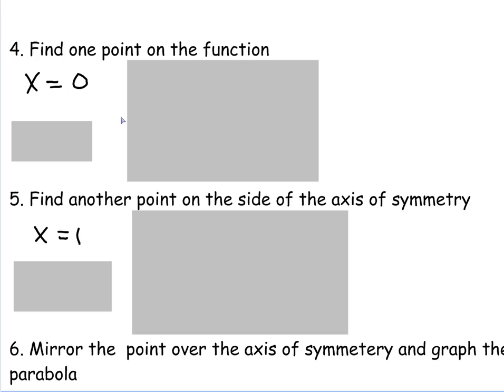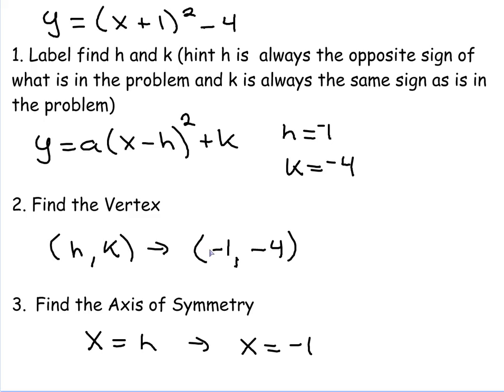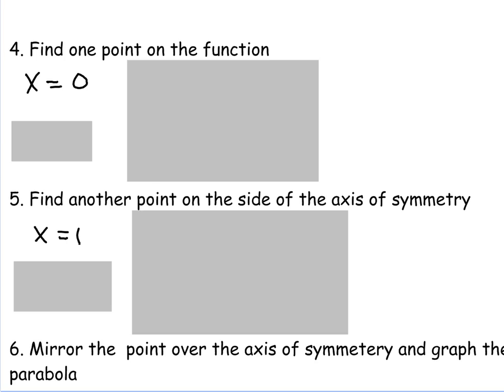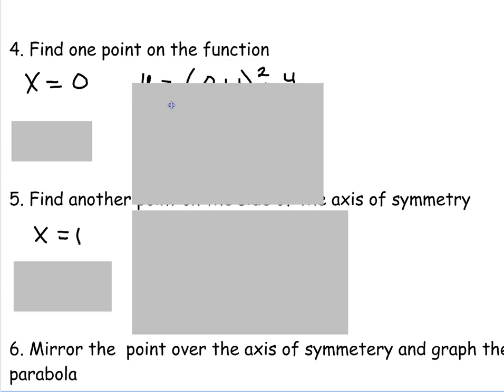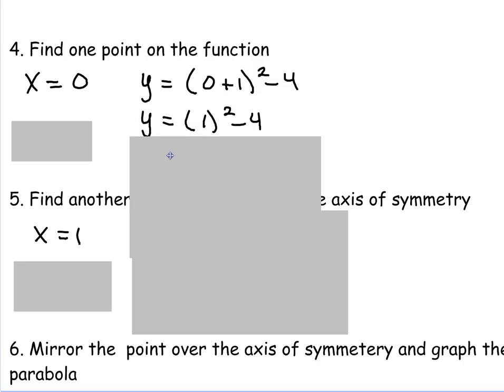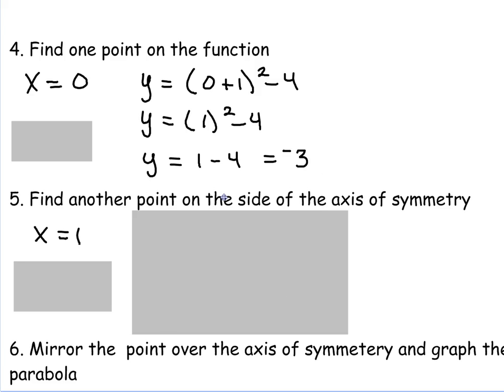Once we find that, we have our vertex and our axis of symmetry, we need to find two more points so we can mirror them over. Unlike the other forms, we don't have any other points to go with. So in this case, we do actually have to find two complete points. Since my vertex is at negative 1, negative 4, my axis of symmetry is negative 1, I'm going to pick the two points on the right-hand side of the graph from that. So I'm going to use X is 0 and X is 1. So what I'm going to do is plug that value in. So Y equals 0 plus 1 squared minus 4. 0 plus 1 is 1. 1 squared minus 4. So 1 squared is 1 minus 4 equals negative 3. So my point in this case is 0, negative 3.